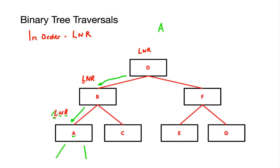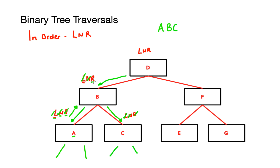I go back up to B having checked the whole of its left subtree. Now I'm at the node part of B and I write that down. The next step is to check the right subtree, so I go to C and rewrite my rule. I check the left subtree at C — nothing there. I come back up and check the node, write it down, then check the right subtree of C — nothing there. Once completed I go back up to B and check the right rule off.